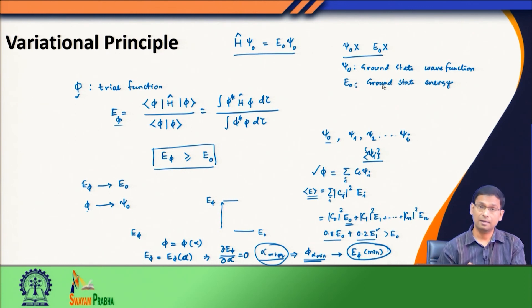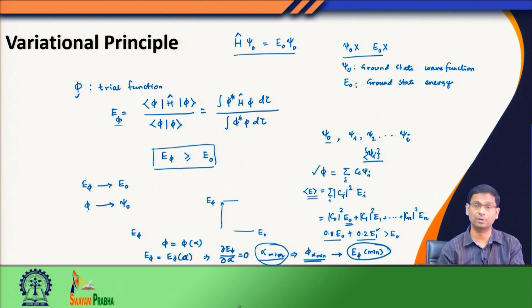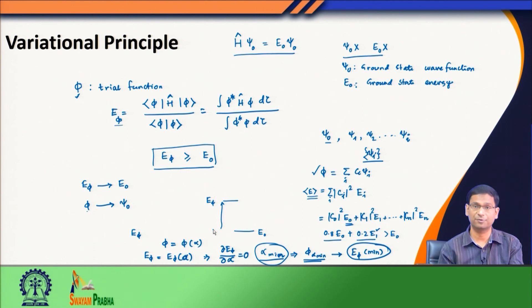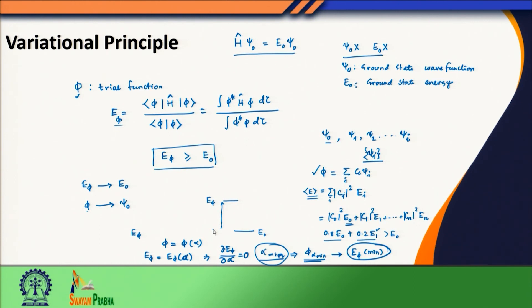We see that if our choice is good — if our starting trial function is a good function — we can come very close to E₀. But if our trial function is not good, no matter how much minimization we do, we simply cannot come very close to the true wavefunction. This is overall the recipe — the variational principle — for how we can get an approximate solution to a system where the exact solution is not known. In the next class, we will take some examples where we can use this variational principle and discuss how we can solve this problem approximately. Thank you for your attention.